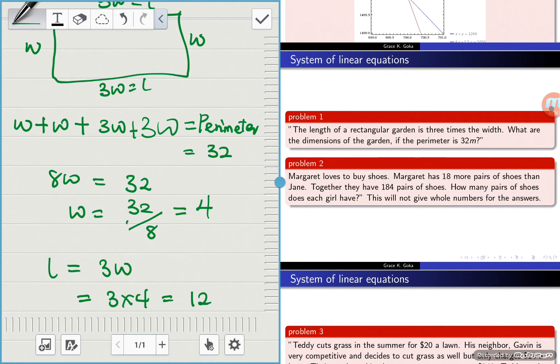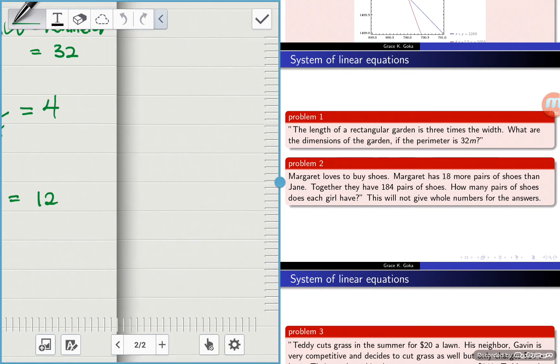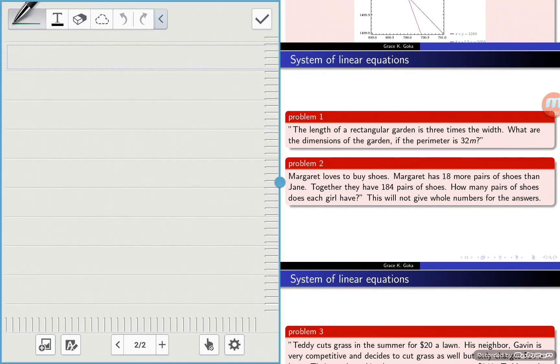So we'll be taking a look at the second problem, which says Margaret loves to buy shoes. Margaret has 18 more pairs of shoes than Jane. Together they have 184 pairs of shoes. How many pairs of shoes does each girl have? And this will not give whole numbers for the answer.